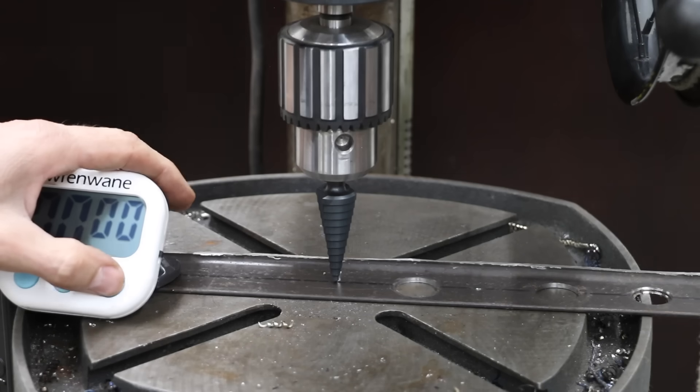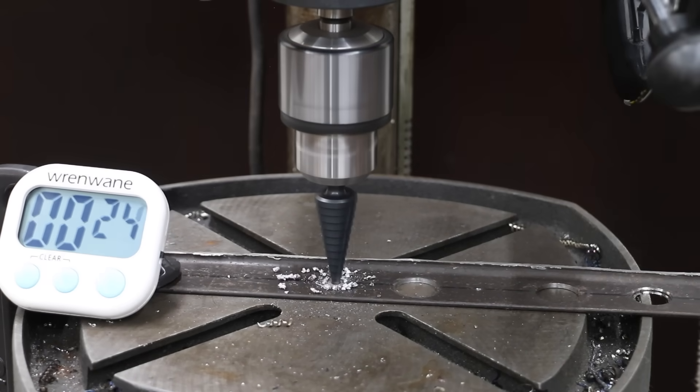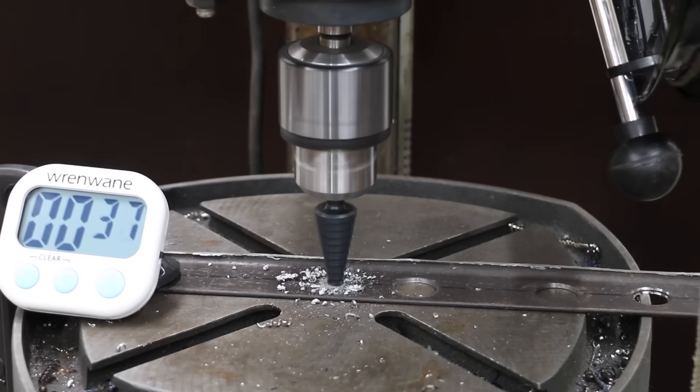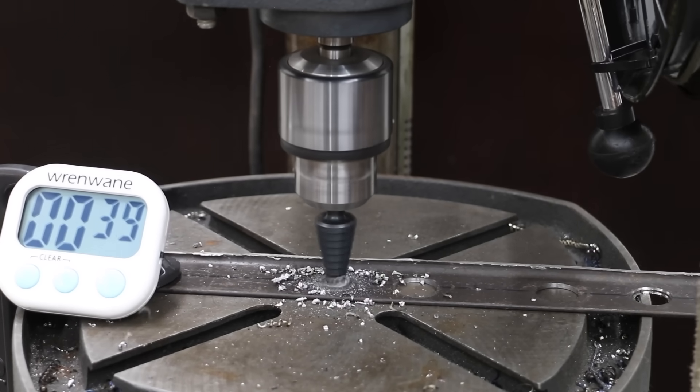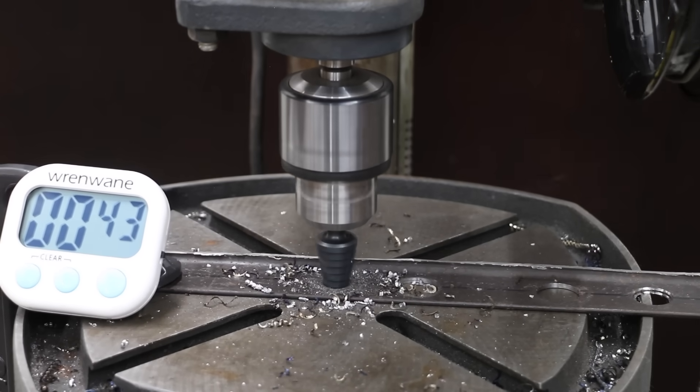But can the double straight flute Lennox beat the DeWalt? The Lennox seems to be made of a softer metal compared to the other brands, and it showed as it took 34 seconds to break through the steel. Unfortunately, the straight flute design seems to have worked against the Lennox as it stalled at a half inch.